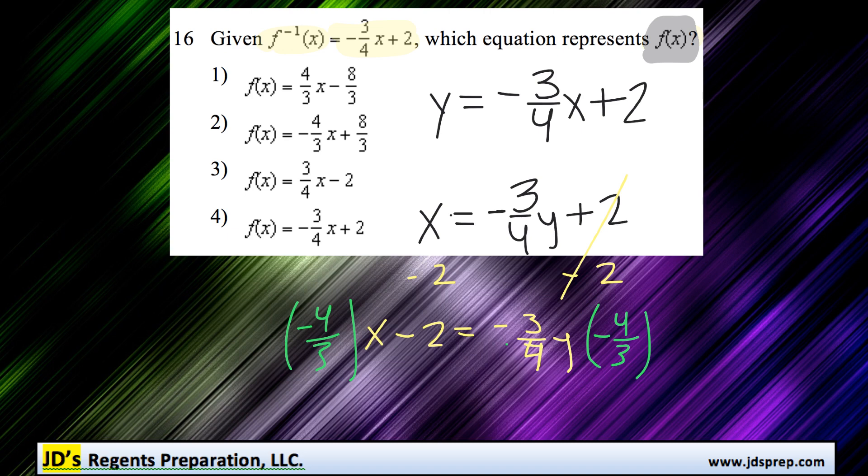By doing that, we cause everything to cancel out. So now we know that y equals negative 4 thirds multiplied by x minus 2.